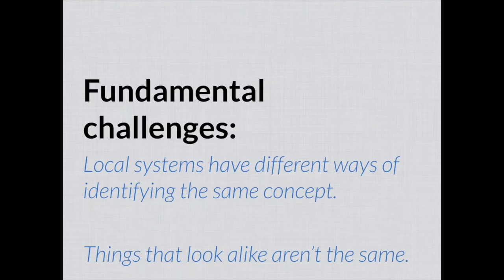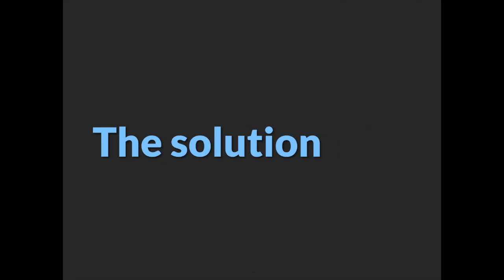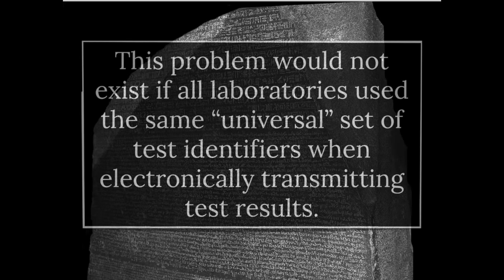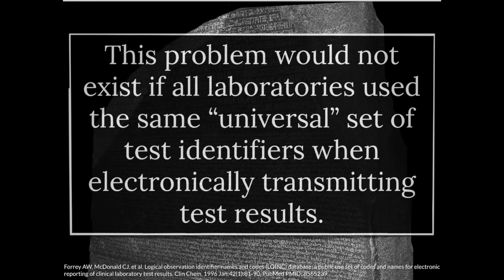The fundamental challenge is that local systems have different ways of identifying the same concept, and things that look alike on the surface aren't really the same if you dig in. The solution is to have something like a converter, a universal language. As that early paper described, this problem of idiosyncratic codes colliding wouldn't exist if all laboratories — or any data producer, any system collecting data — used the same universal set of test identifiers when electronically transmitting results.